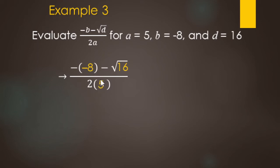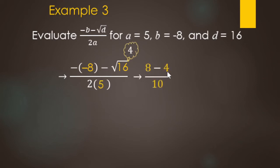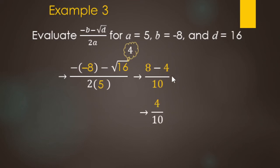For the exponent step, square root of 16 makes 4. Then for multiplication: negative negative 8 is positive 8, and 2 times 5 makes 10. The fraction bar is a grouping symbol, so we still need to simplify the numerator: 8 minus 4 is 4, over 10.